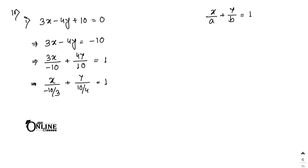From the intercept form, a equals minus 10/3 and b equals 10/4, which can also be written as 5/2.